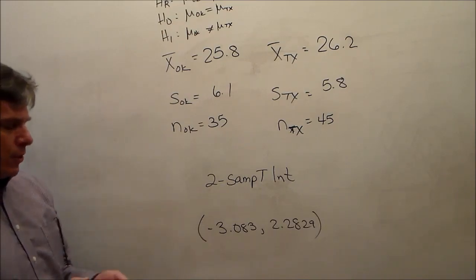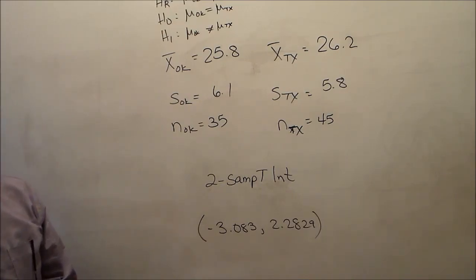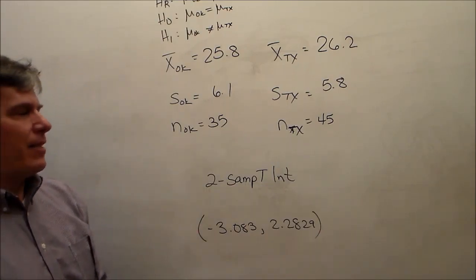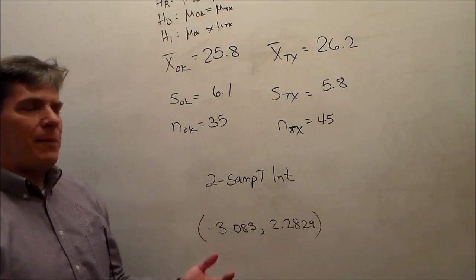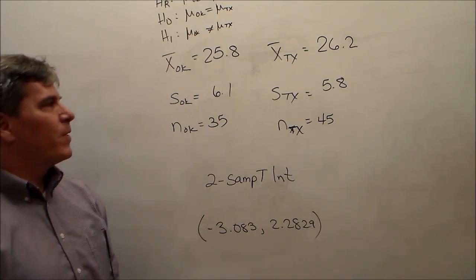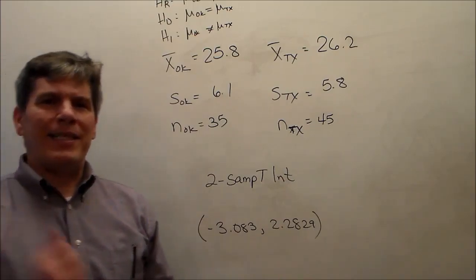So there we go. Part 1 was 2-prop-z-test and 2-prop-z-int. Part 2 was 2-samp-t-test and 2-samp-t-int. The test parts give you the test statistic and the p-value. The int part gives you the confidence levels. Hopefully this was helpful. See you in class tomorrow.